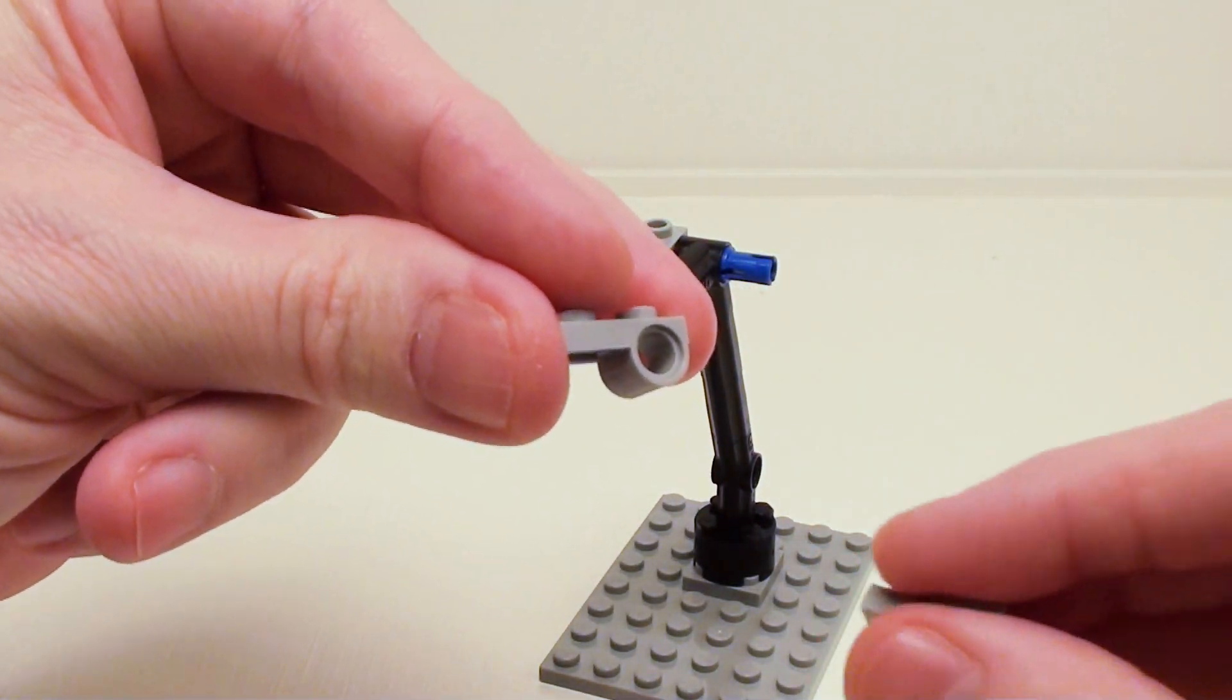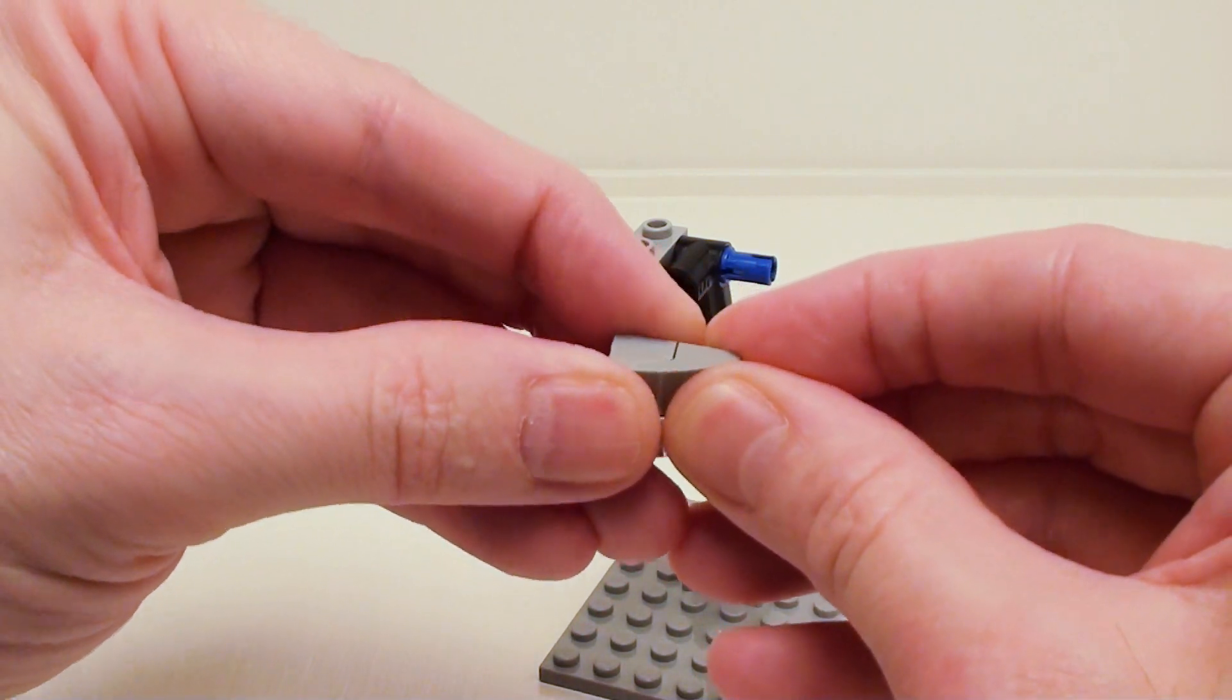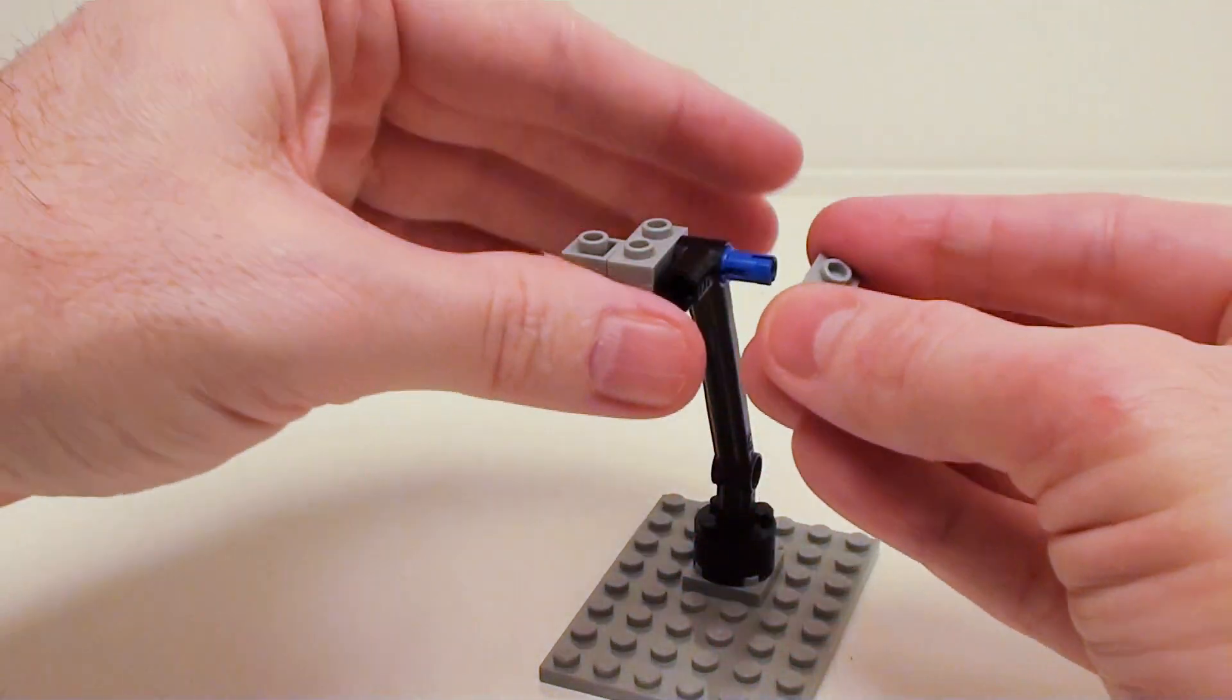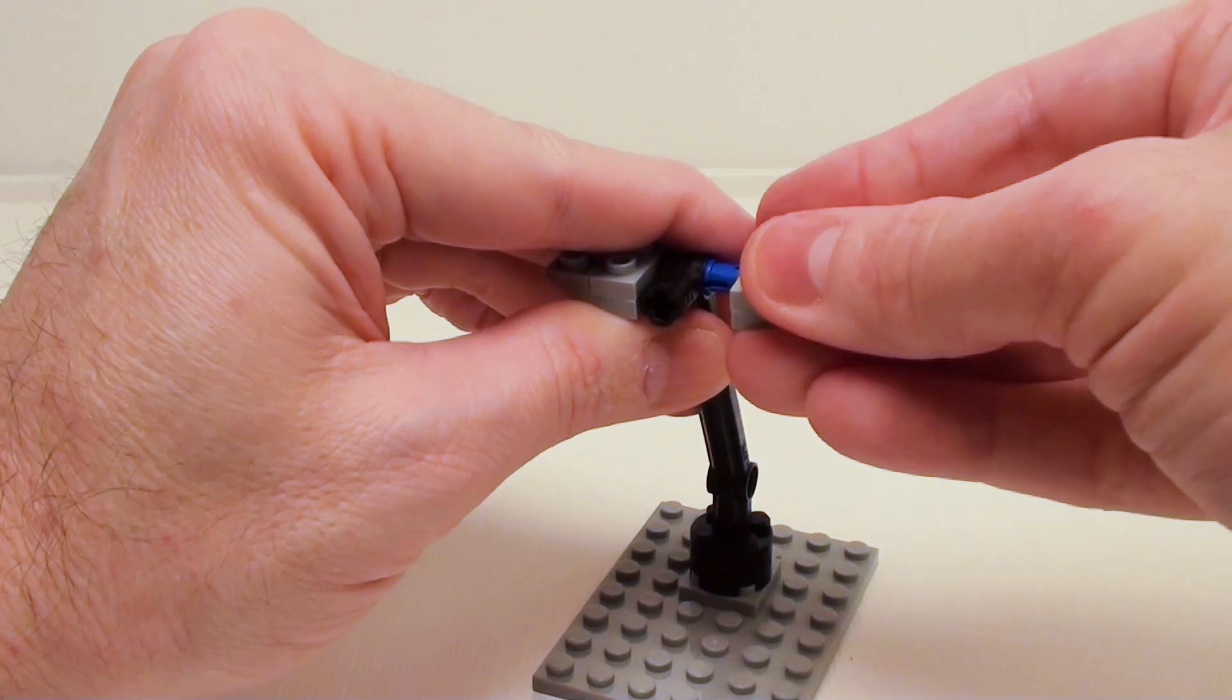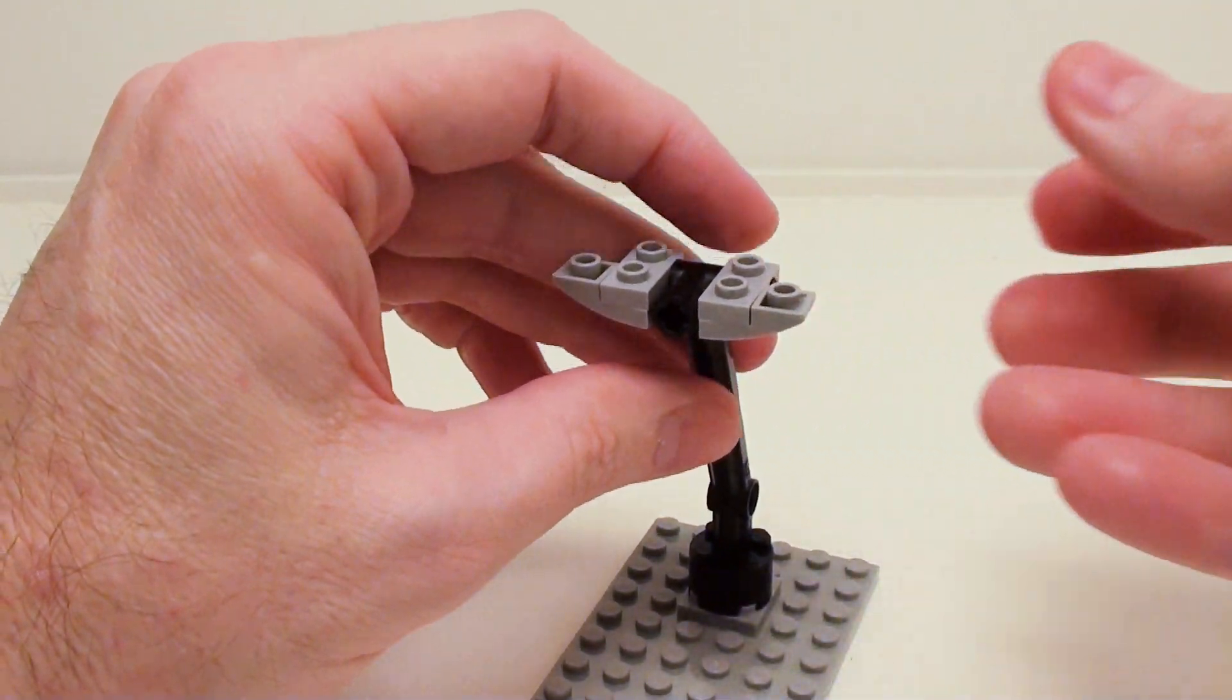Take another 1 by 2 modified plate with Technic pin connector. Let's place a 1 by 2 inverted plate with bow. Put it on the bottom and then we're going to set this one on the right-hand side.